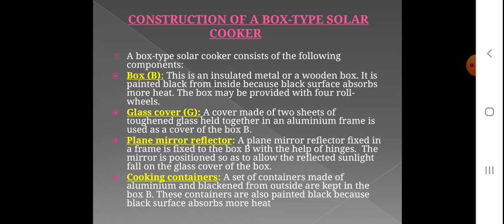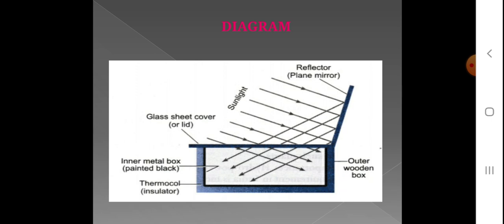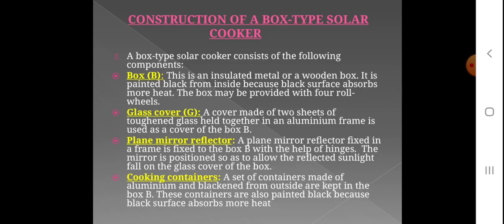This box type of solar cooker consists of the following components: the box, glass cover, plane mirror reflector, and cooking container. The box is an insulated metal or wooden box.